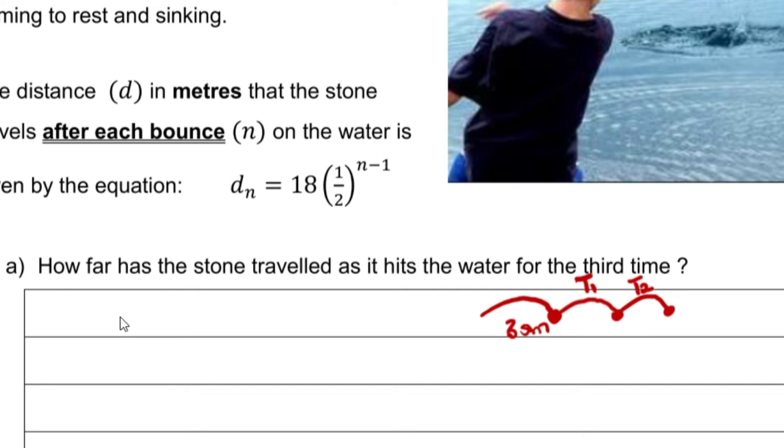All we need to do is substitute into the formula. We're saying 18 times one-half. Since for the first bounce I'll make n equals 1, simplifying this gives you 18. For the second bounce we'll do the same thing: we have 2 minus 1, and that would be 18 times one-half which is 9.